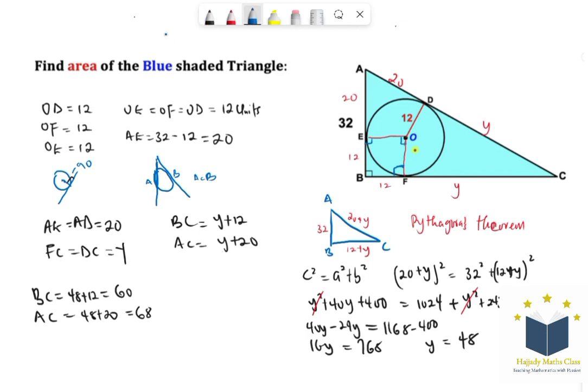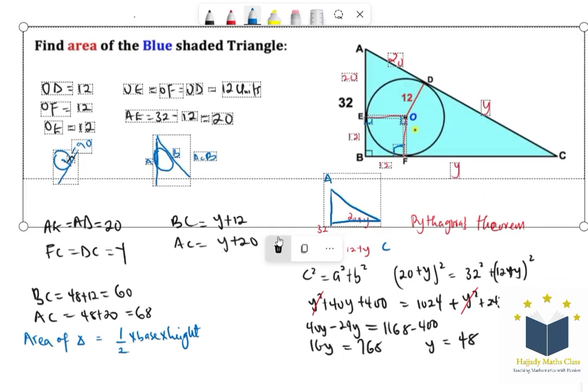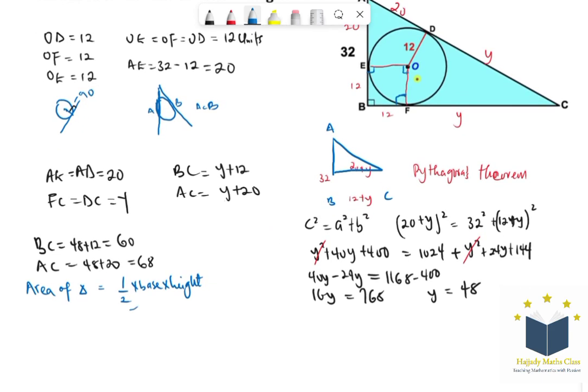And don't forget from the formula for the area of a triangle, we have our area of triangle to be equals to half multiplied by the base times the height. So this is going to be half multiplied by the base which is 60, multiplied by height which is 32. So finally my area is going to be 960 square units.